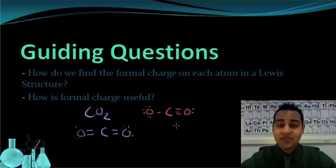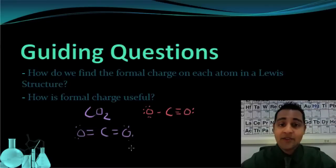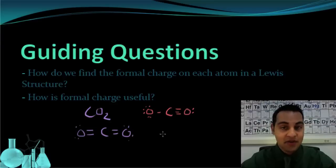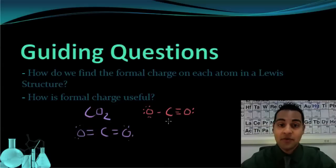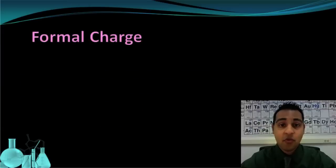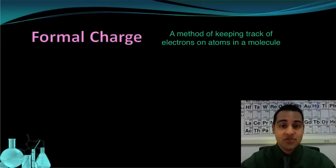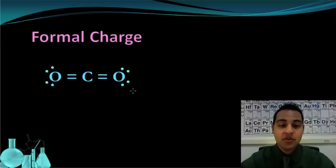There are two ways to go about answering that question. One is to look for experimental evidence. For example, bond lengths have been analyzed for different molecules, and for carbon dioxide we could look up that the bond length between carbon and oxygen is the same in every molecule. But if we didn't have that experimental evidence, we could still find out which Lewis structure is more accurate by using something called formal charge — a method of keeping track of electrons on atoms in a molecule or ion.